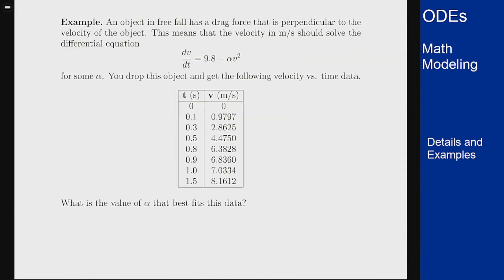The next example involves drag coefficients. An object falling in free fall has the differential equation dv/dt = 9.8 - αv². We assume the drag force is proportional to the square of the velocity. But now instead of having exactly two points of data, we have a whole list of data. So I want to figure out what value of α best fits this collection of data.